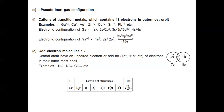In Lewis dot structure, the dots surrounding the element symbol represent the number of valence electrons.